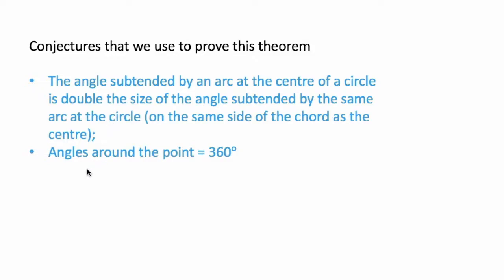And then another fact that you're going to use is that angles around a point are equal to 360 degrees. So we're going to use these two facts to prove the theorem that says that opposite angles of a cyclic quad are supplementary.